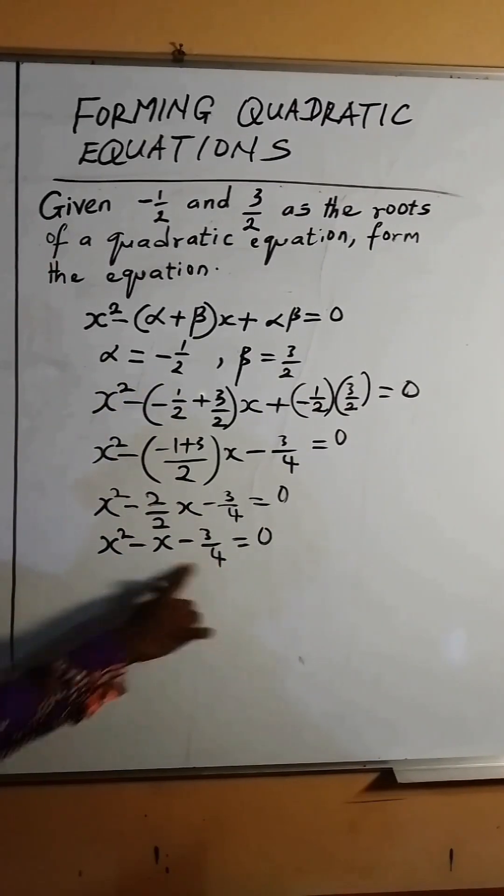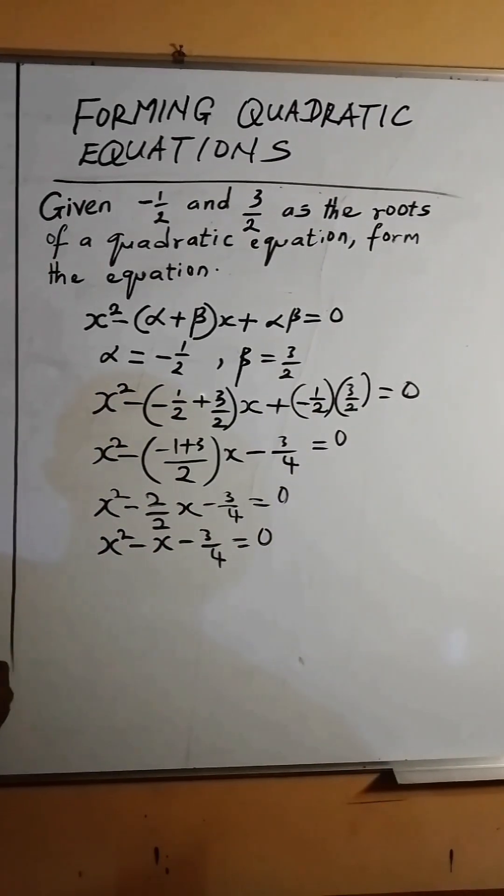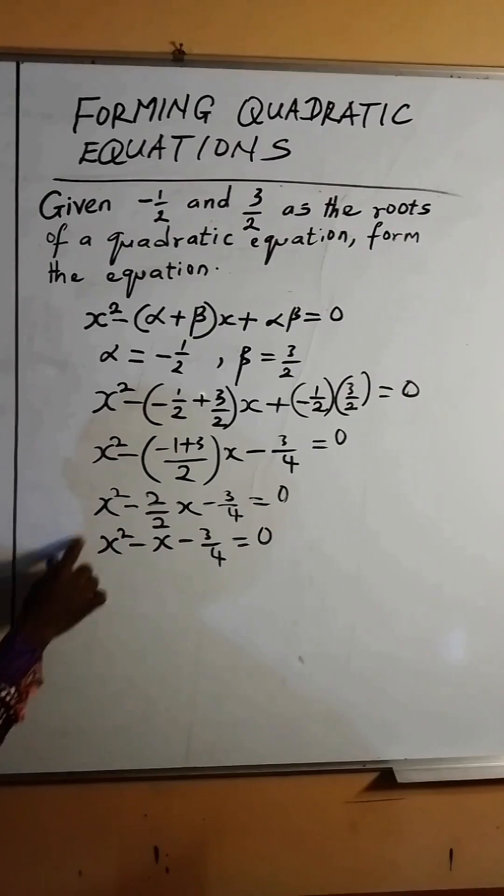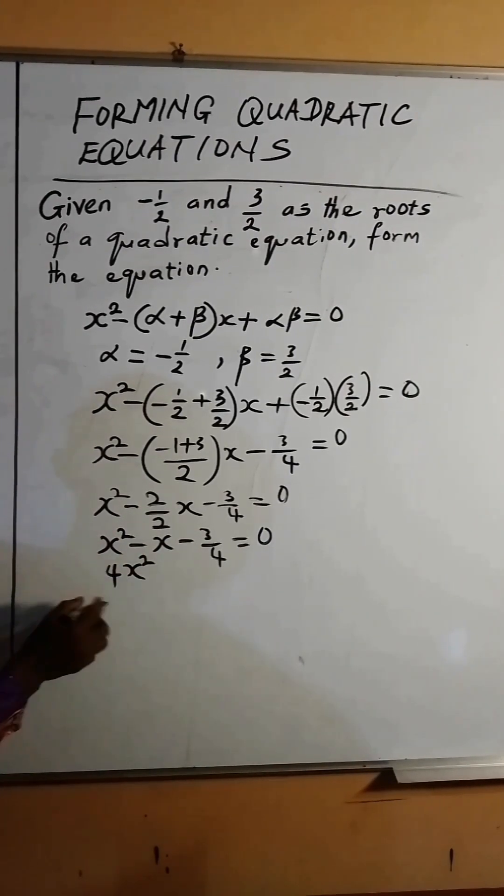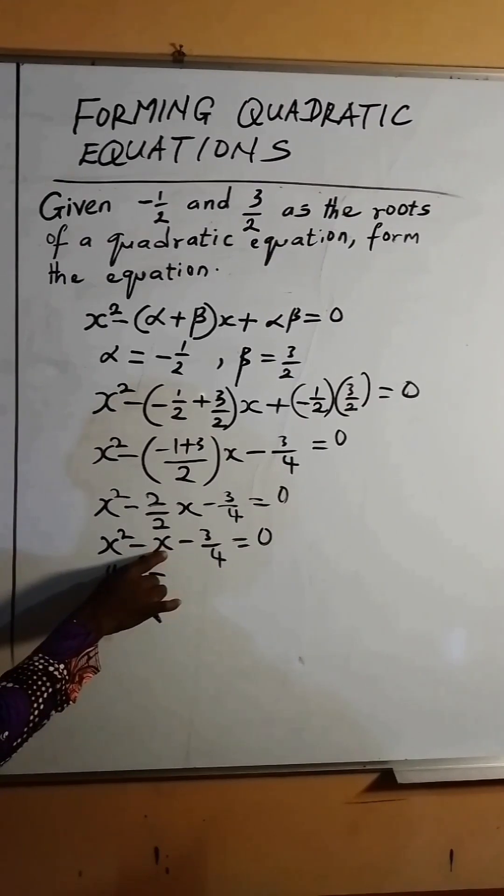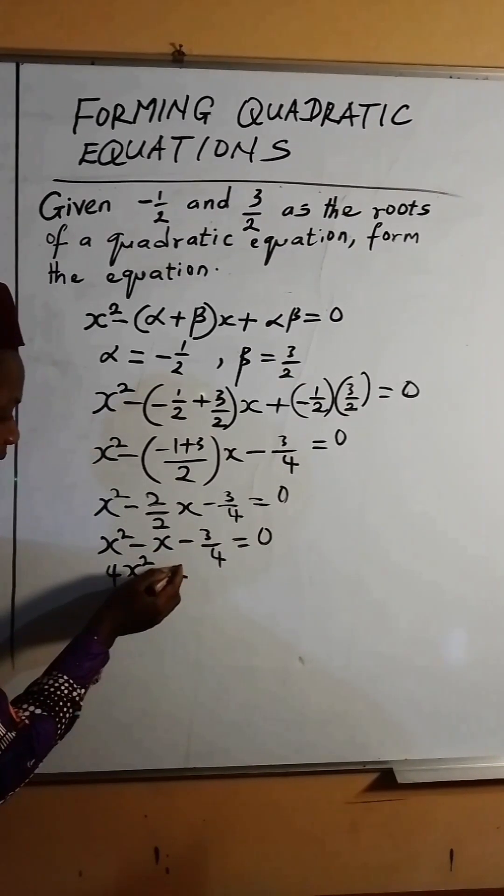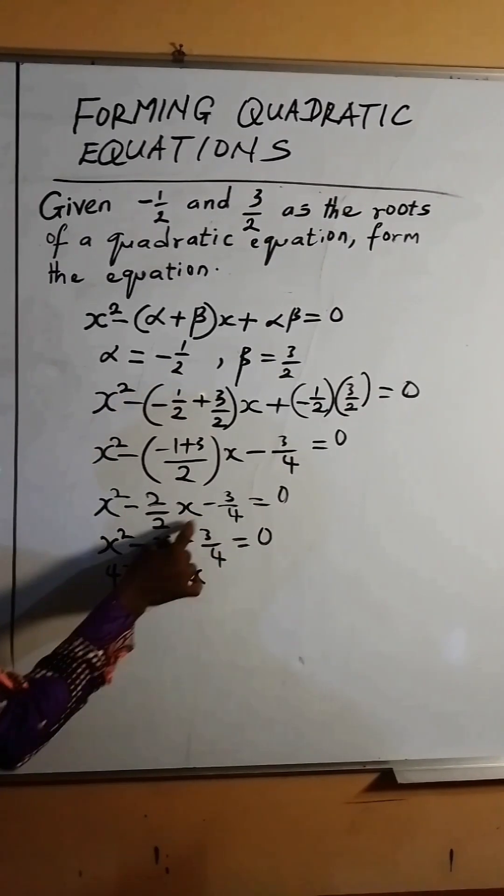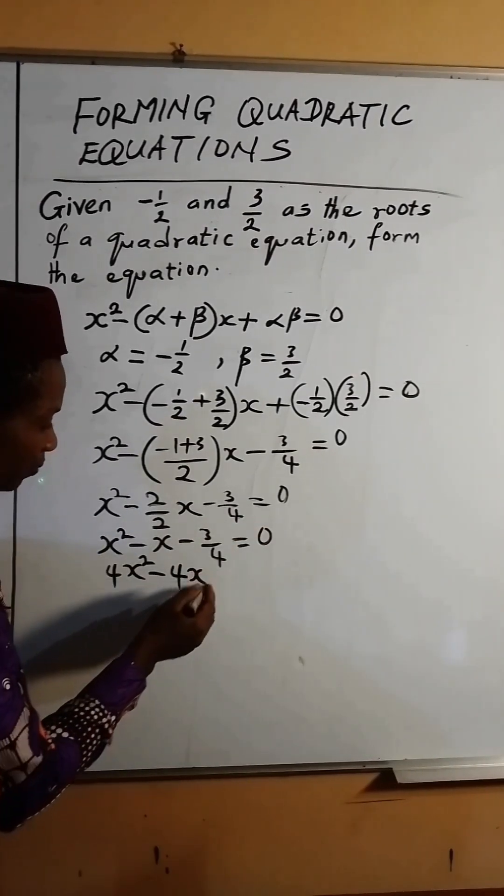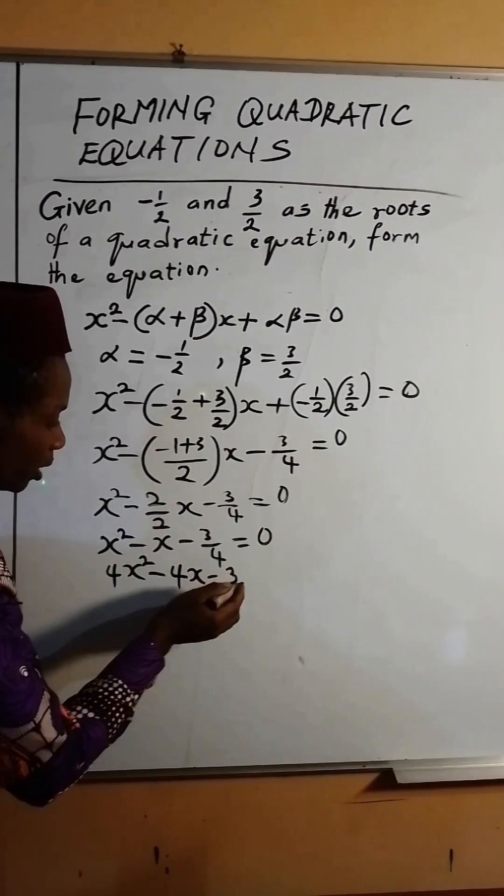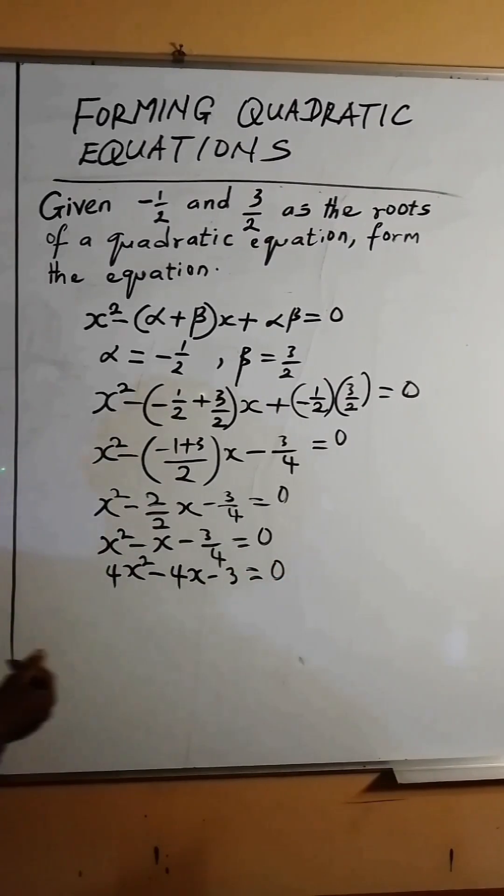Now because of this 4, we multiply all through by 4. If you multiply x squared by 4, we are going to get 4x squared. Then if we multiply x by 4, we will get 4x. Then if we multiply minus 3 over 4 by 4, the 4s cancel. Then we have minus 3, and this equals 0.